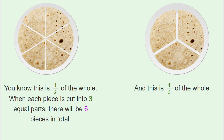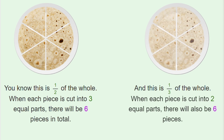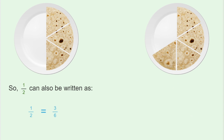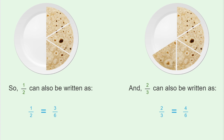This is one third of the whole. When each piece is cut into two equal parts, there will also be six pieces. So now there are six pieces in both. One by two can also be written as three by six, and two by three can also be written as four by six.